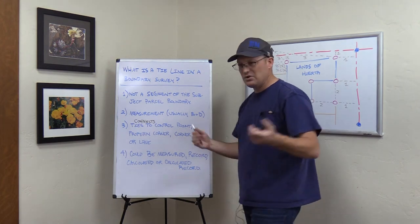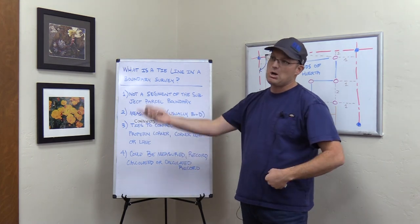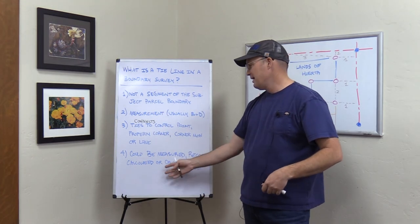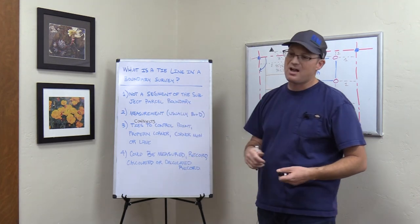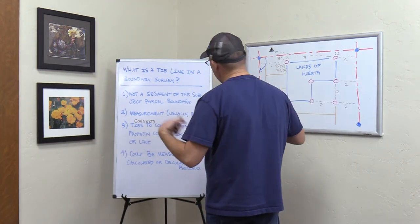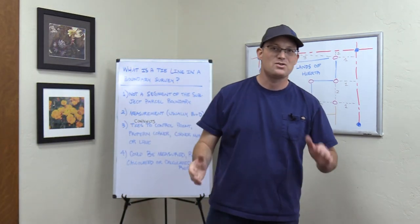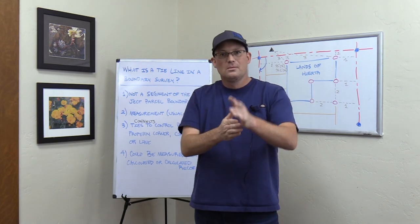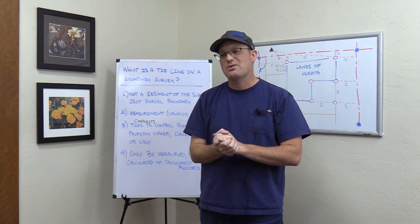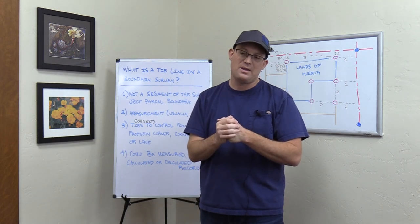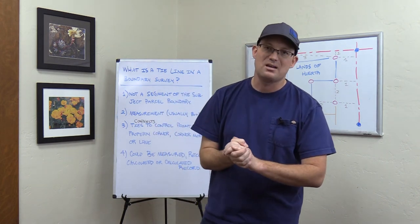So that's what a tie line is. To review: it's a line in your survey that has some kind of measurement and connects important objects — corners, monuments, surveyed lines, control points. The measurement value can be record, measured, calculated, or calculated from record, and it's not on your subject parcel. If it fits all those criteria and it's not a centerline, easement line, or right-of-way line, then in my shop it's probably a tie line. Appreciate you guys watching. If you like these videos, hit subscribe on YouTube, and we'll talk more about the different types of lines in a boundary survey and why they're important.